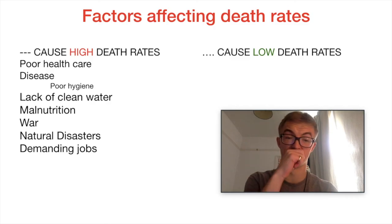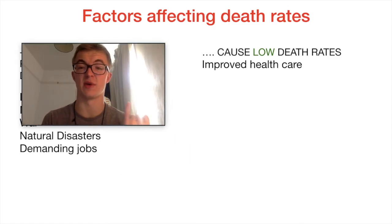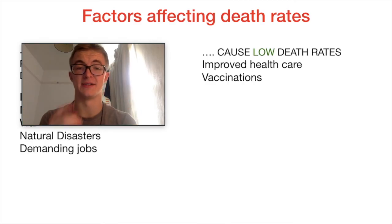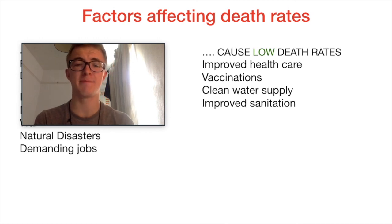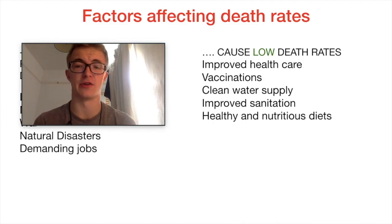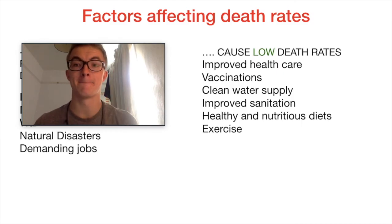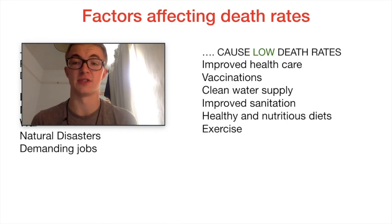In terms of causing lower death rates, it's almost the opposite. Better access to health care is key — more doctors, more medicines, and vaccinations for many curable diseases that weren't available before. Cleaner water supply and better sanitation are also important. Healthy and nutritious diets, along with exercise, help ensure we can synthesise those nutrients and maintain a healthy weight, which reduces susceptibility to certain diseases, particularly cardiovascular diseases.